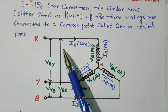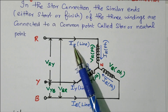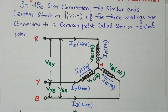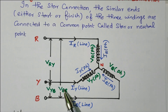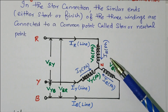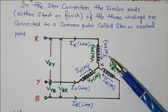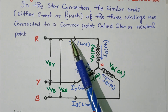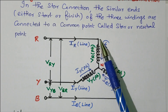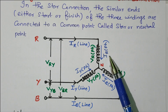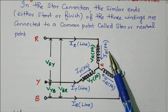The current flowing through R phase is IR line — this is the line current. The current flowing through Y phase is IY line, and B phase is IB line. These three currents are line currents. When this line current flows through the phase, it becomes IR phase — the current flowing through the R phase. In star connection, IR line is equal to IR phase; both are equal. The line current and phase current are equal.